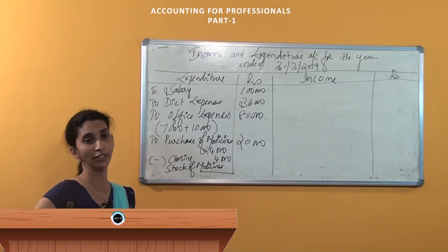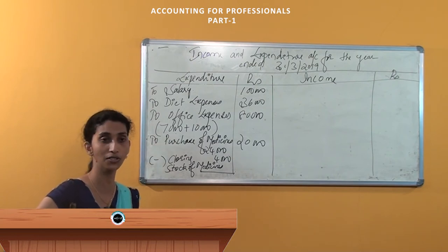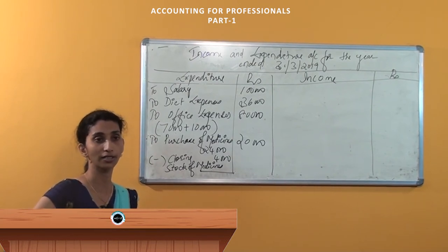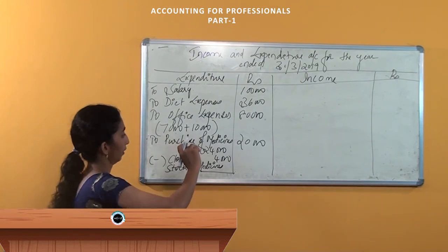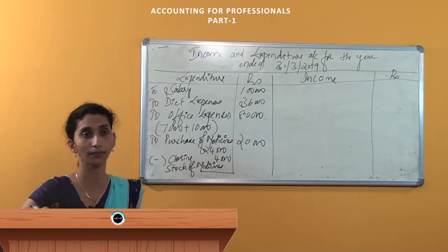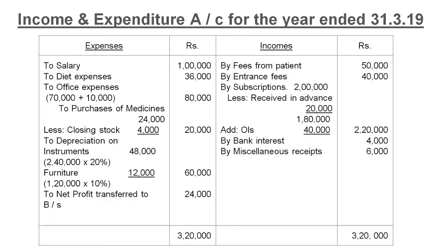The closing balance of cash and bank obviously comes under the balance sheet. For the adjustments: office expenses are done; subscription comes under the income side because it is income; donations are to be capitalized under the capital fund; and outstanding subscription comes under the income side.